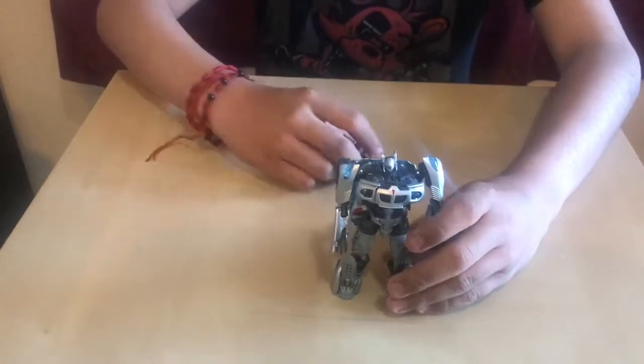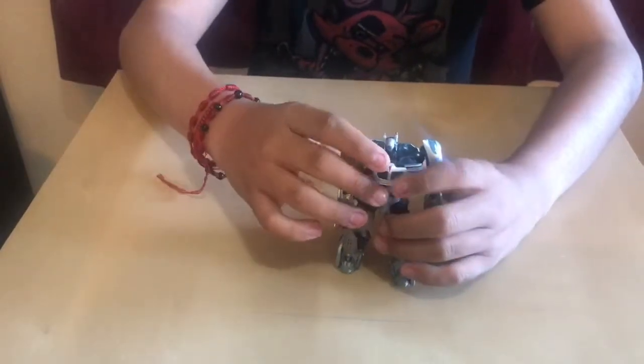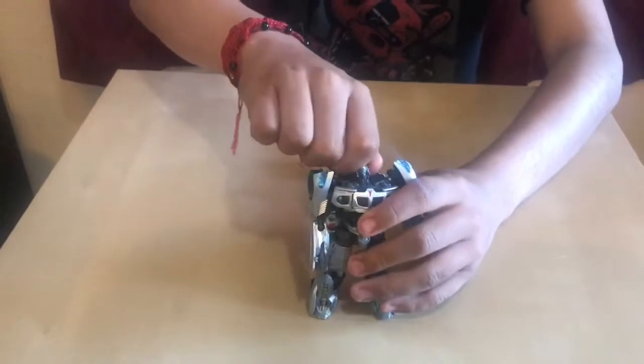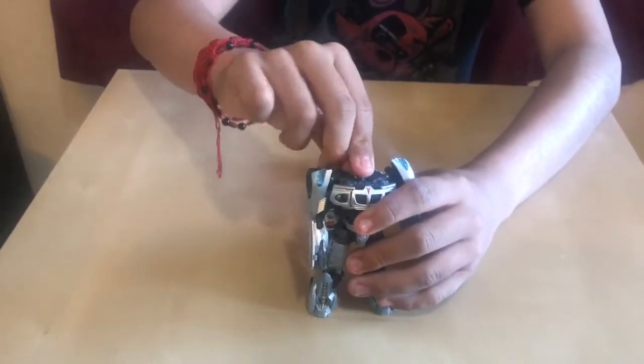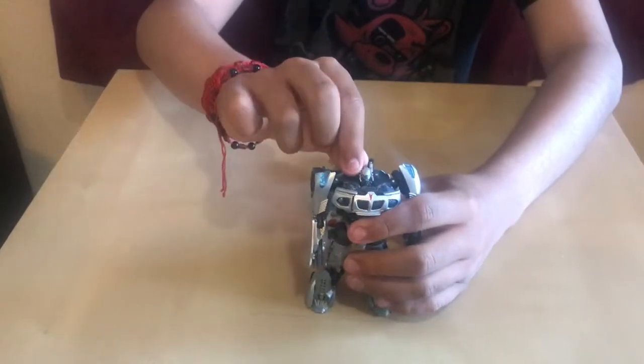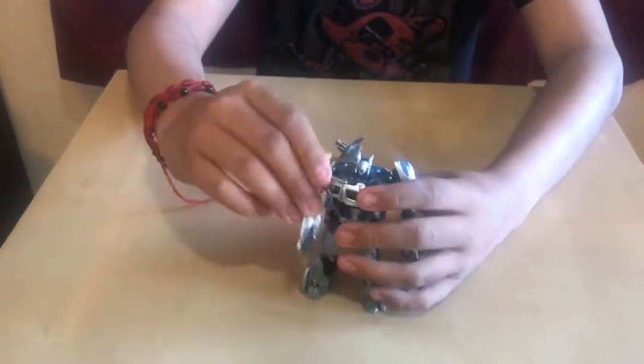So let's talk about his articulation. He has a ball joint at the head. He could look up if you just fold the little panel down where his head sat.